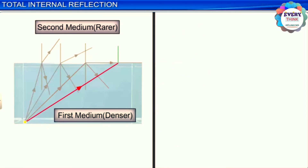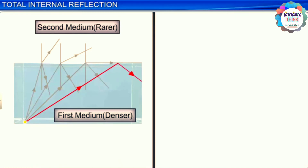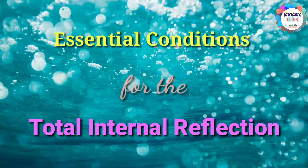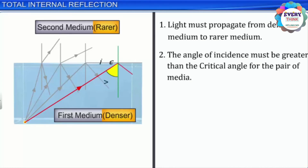If the angle of incidence is made larger than the critical angle, the incident light cannot refract into the rarer medium and is completely reflected back into the denser medium. This is known as total internal reflection. Since there is no transmission of light to the rarer medium, light gets completely reflected back into the denser medium. For total internal reflection to occur, the light must propagate from a denser medium to a rarer medium, and the angle of incidence must be greater than the critical angle for that pair of media.